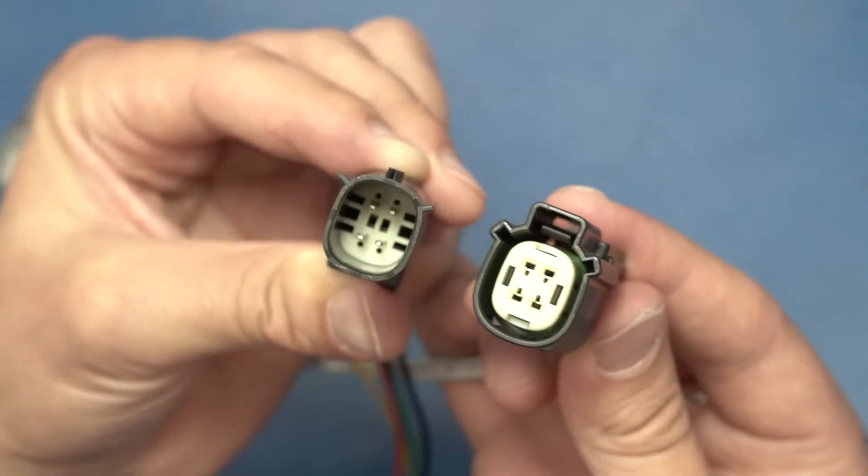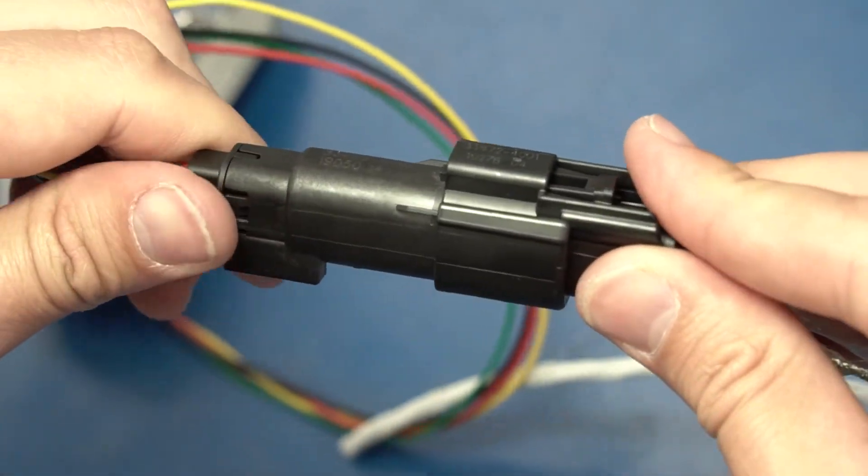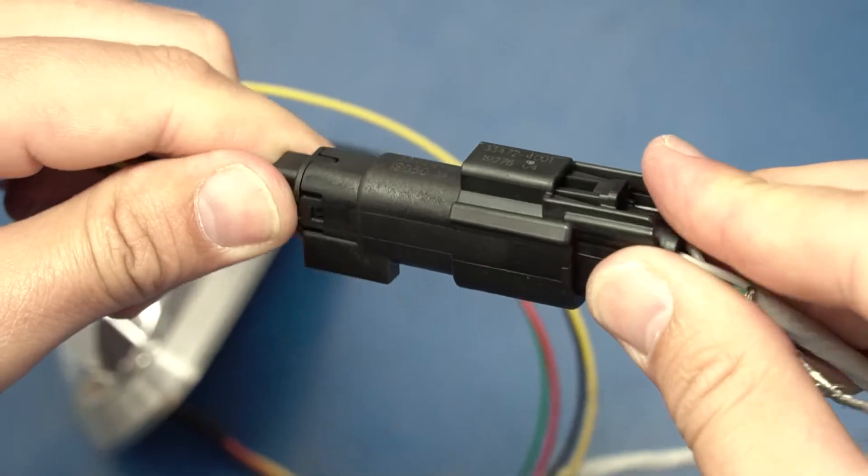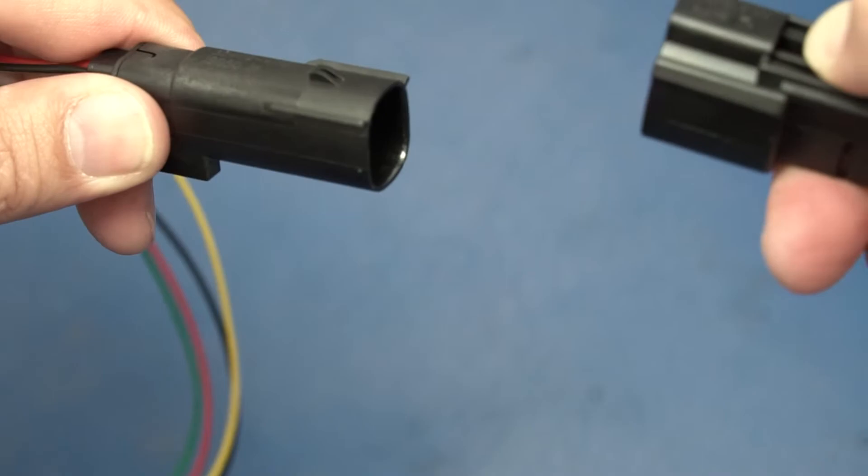Now you can connect both the male and female connectors. You should hear the clicking sound. Pull to make sure it's a rigid connection. If needed pull down on the lever to remove the two connections.